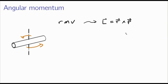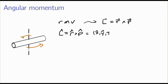We can make an analogous expression in quantum mechanics simply by replacing the arrows with hats. Let's define a momentum operator l-hat equal to r-hat cross p-hat, where p-hat is a vector momentum operator and r-hat is a vector position operator — essentially (x-hat, y-hat, z-hat) as a vector crossed with (px-hat, py-hat, pz-hat) in Cartesian coordinates.